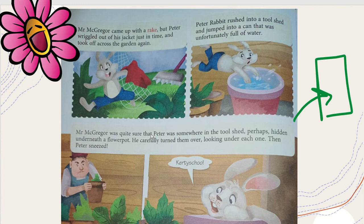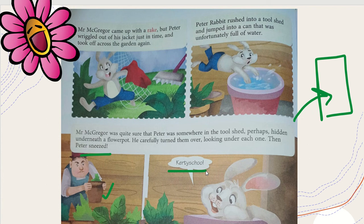Mr. MacGranger carefully turned over each flower pot, looking under each one. Then Peter sneezed — making a sound like 'Curtis coo' — and the moment he sneezed, MacGranger figured out where the sound was coming from.